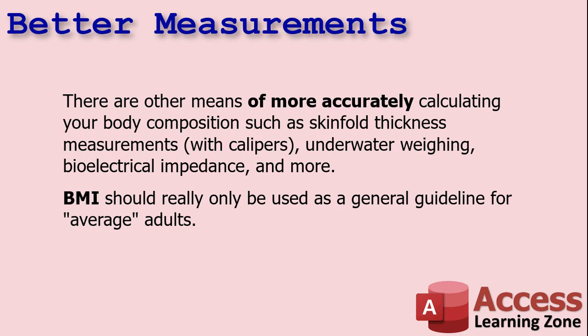I used to have a scale that would pass a current through your body — up one foot and down the other — and it could calculate what percentage of your body weight was fat. So basically, BMI is really only used as a general guideline for average adults. If you're an athlete, a bodybuilder, very old, or a child, it doesn't work for you. But for most of us, it's okay.